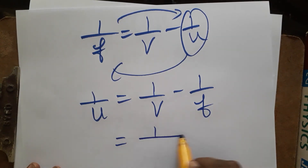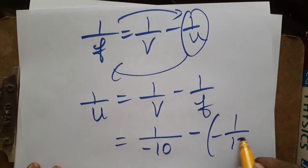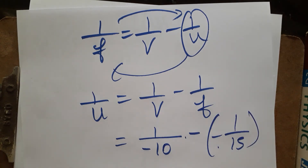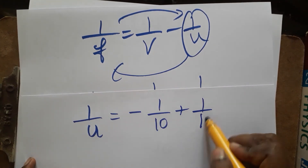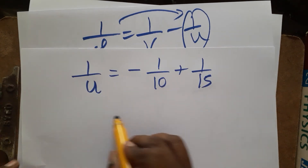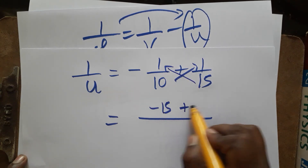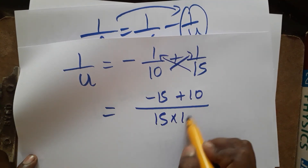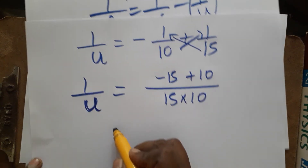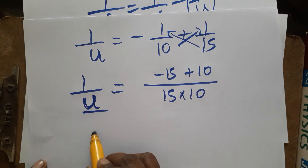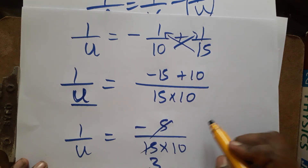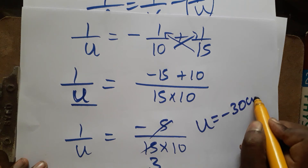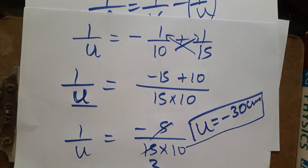Substituting the values: v = −10 cm and f = −15 cm. So 1/u = (−1/10) + (1/15), since minus minus becomes plus. Cross-multiplying: (−15 + 10) / (15 × 10) = −5/150. Simplifying, 1/u = −1/30, so u = −30 cm. The object distance is 30 cm.